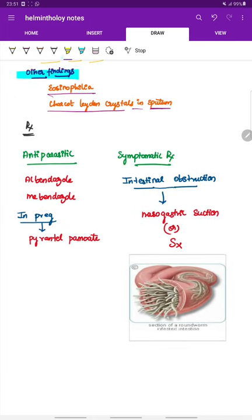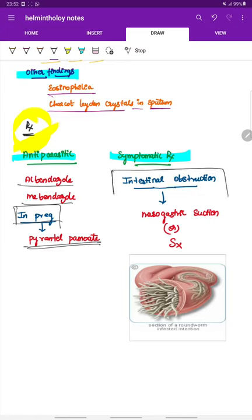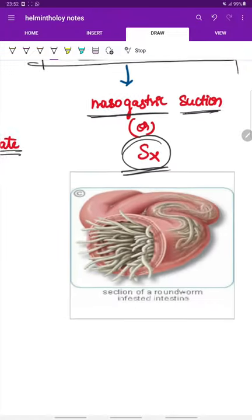Lastly, the treatment. Treatment of roundworm infection includes anti-parasitic drugs and symptomatic treatment. The anti-parasitic drugs given are albendazole and mebendazole. In case of pregnant women, pyrantel pamoate is preferred. Symptomatic treatment for intestinal obstruction is nasogastric suction or surgery to remove the worm load.